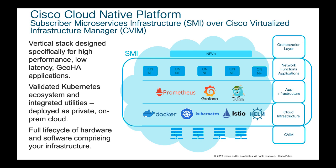On top of that we have the common application infrastructure — Prometheus, Grafana, and Jaeger for open tracing. After that, we have the layer containing the 5G network functions like SMF, PCF, AMF, UPF, and so on. All of that is orchestrated, managed, and deployed by Cisco's orchestration layer, which is NSO — the Network Service Orchestrator — and ESC, the Elastic Server Controller, which ensures all layers and the full hardware and software lifecycle are properly managed.